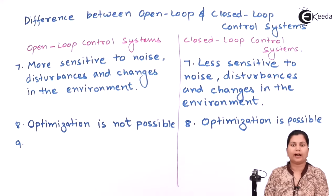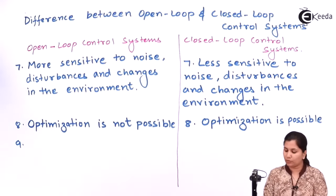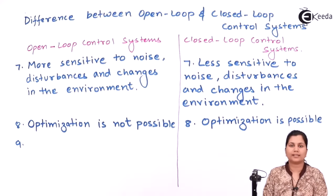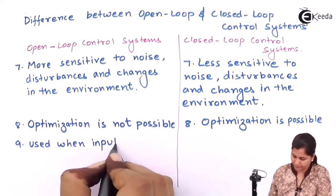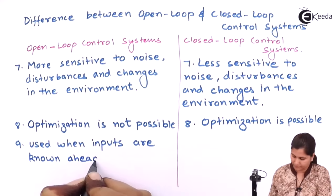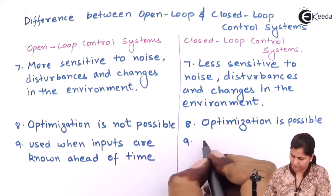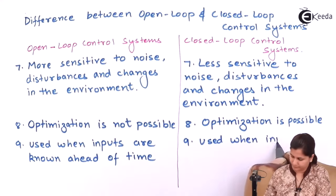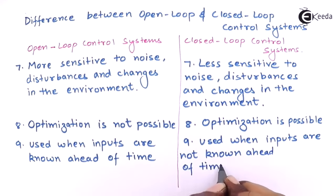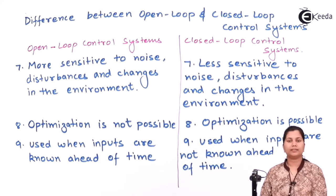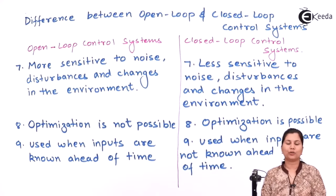The next difference is that open loop control systems can be used when the input is known ahead of time — that is, we know the input values beforehand. Whereas closed loop control systems are used when the inputs are not known to us ahead of time.